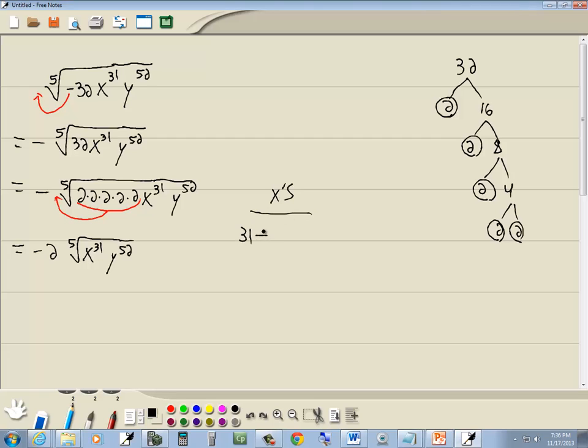So we're going to take 31 divided by 5. 31 is our power. How many x's do we have? 5 is our index, the number in the root. We do old-style division here. 31 divided by 5 is 6, with a remainder of 1.